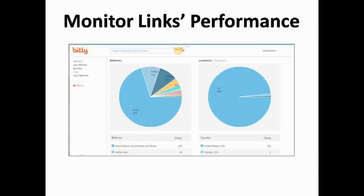To monitor your Bitly performance, click on the Stats menu item in the menu located on the left side of the home page. On the Stats page, you can see the number of clicks over time, which sites visitors were referred from, and their geographical locations. You can also A/B test using Bitly stats.